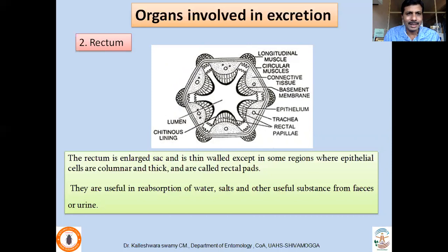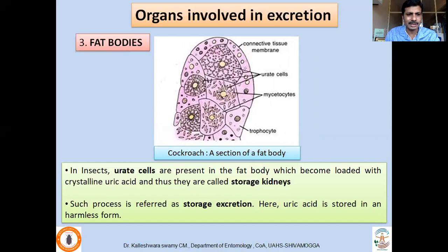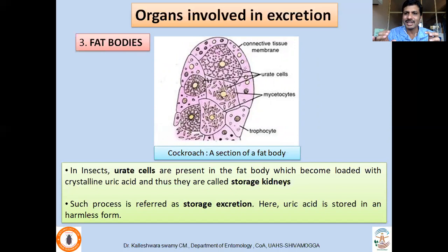Other important organs involved in excretion are the fat bodies. Fat bodies have some cells modified to store uric acid, the nitrogenous waste substance; those are called urate cells, which are scattered throughout the fat body. These urate cells store uric acid in crystalline form, which is a harmless form. This type of urate cell is called a storage kidney, and the process of elimination of nitrogenous waste through urate cells is called storage excretion.